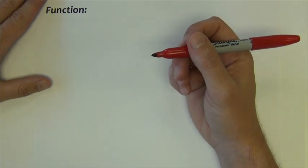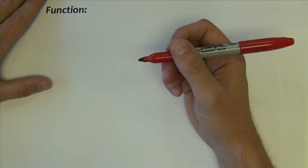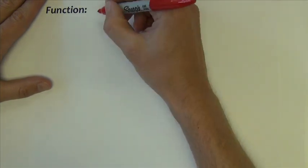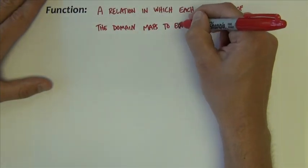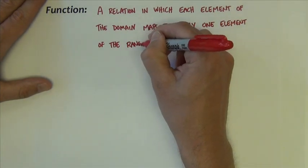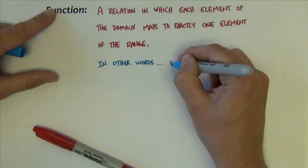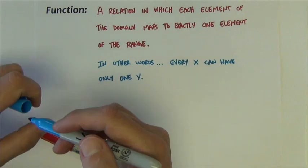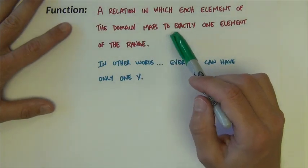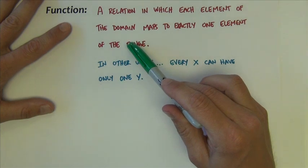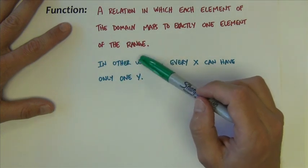So first, what is a function? We can define a function to be this: a function is a relation in which each element of the domain maps to exactly one element of the range.